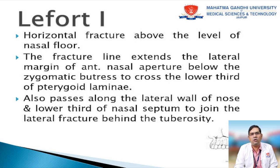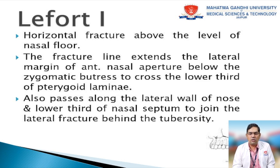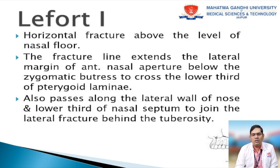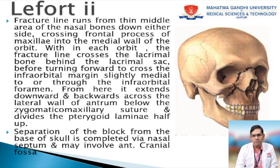It crosses to the lower third of the pterygoid lamellae, and also passes along the lateral wall of the nose and the lower third of the nasal septum to join the lateral fracture line behind the tuberosity area.